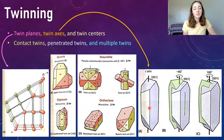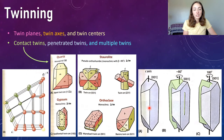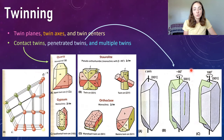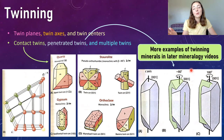Twinning crystals can be classified into three main groups: contact twins, penetrated twins, and multiple twins. Contact twins are when the two crystal grains are separated by a twin plane — a mirror plane. Penetrated twins are like the rotation axis example, where the twinning crystal has rotated around that axis and penetrated the other crystal. Multiple twins means three or more crystal grains are involved. More examples of twinning minerals in thin section and hand samples will appear in later mineralogy videos.